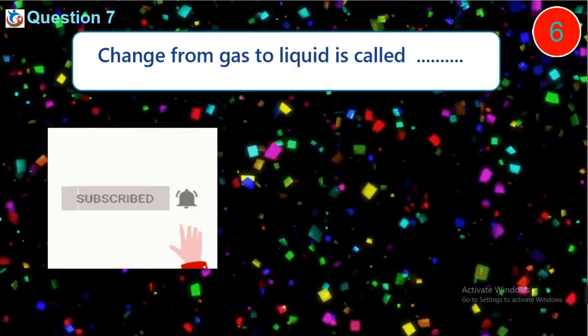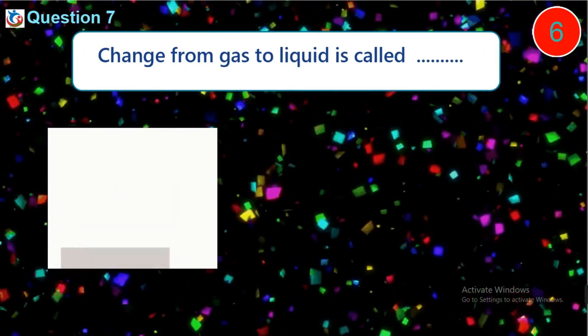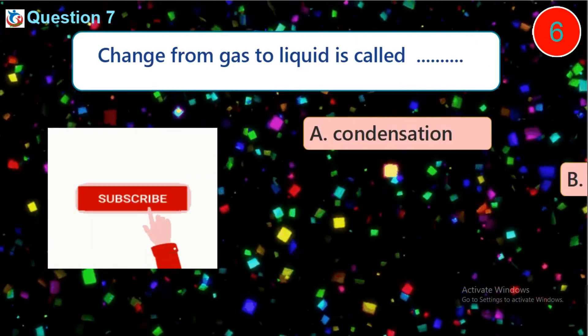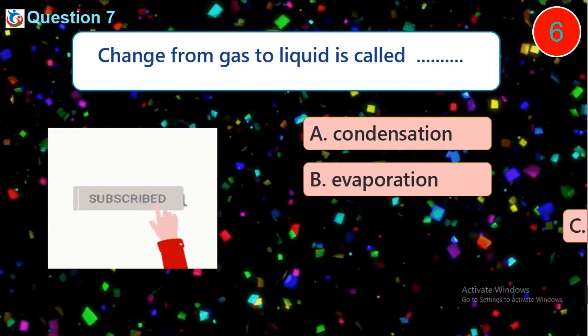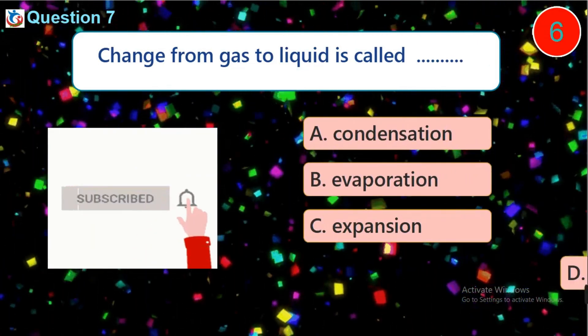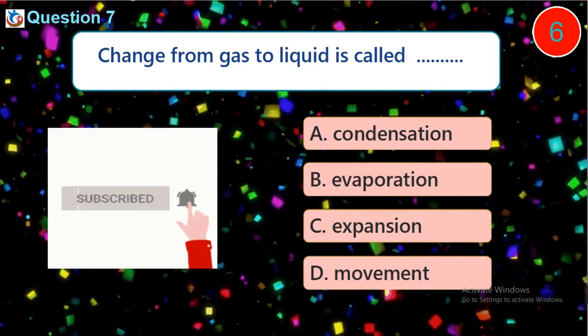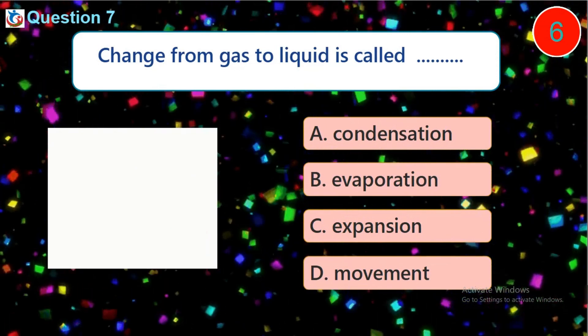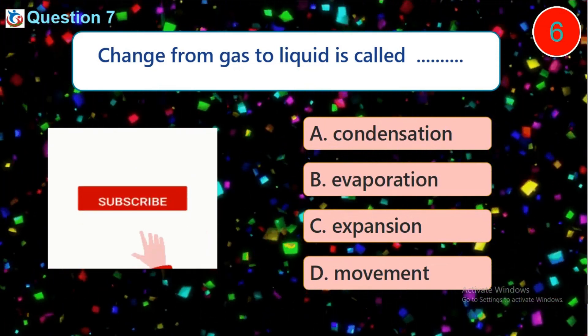Question 7. Change from gas to liquid is called dash. A. Condensation. B. Evaporation. C. Expansion. D. Movement.